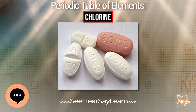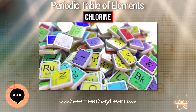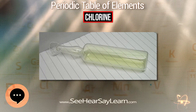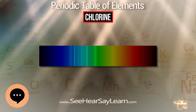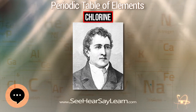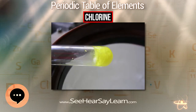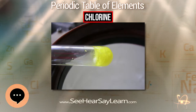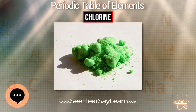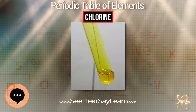Chlorine trifluoride reacts with many substances which in ordinary circumstances would be considered chemically inert, such as asbestos, concrete, and sand. It explodes on contact with water and most organic substances. The list of elements it sets on fire is diverse, containing hydrogen, potassium, phosphorus, arsenic, antimony, sulfur, selenium, tellurium, bromine, iodine, and powdered molybdenum, tungsten, rhodium, iridium, and iron. An impermeable fluoride layer is formed by sodium, magnesium, aluminium, zinc, tin, and silver, which may be removed by heating.